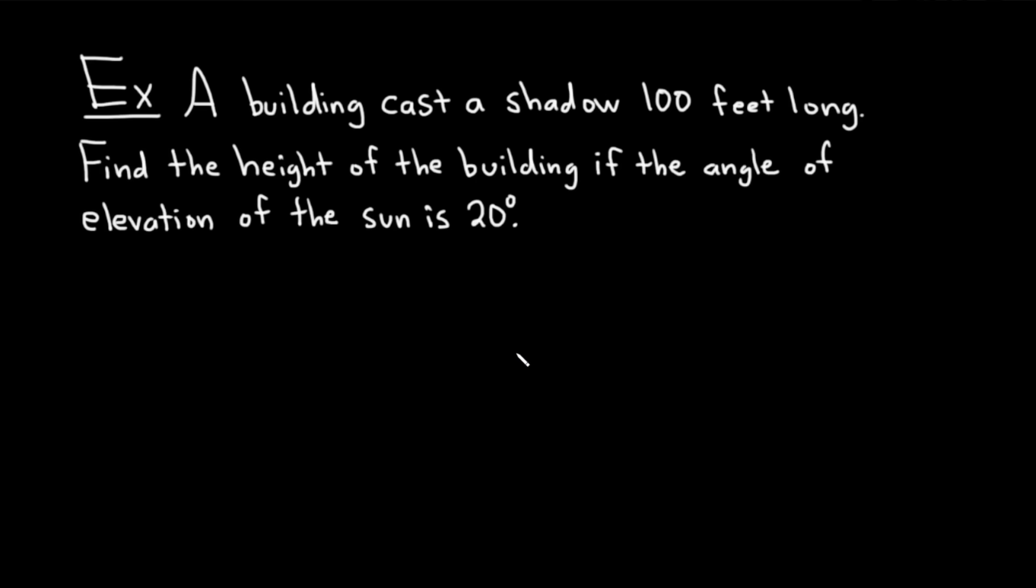In this example, we are going to do a word problem. The question says, a building casts a shadow 100 feet long. Find the height of the building if the angle of elevation of the sun is 20 degrees. Let's work through it carefully.